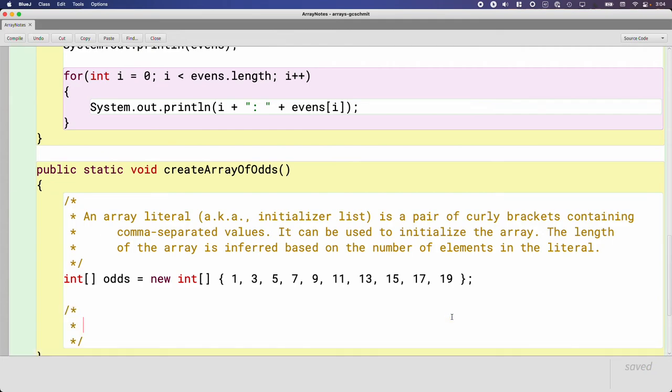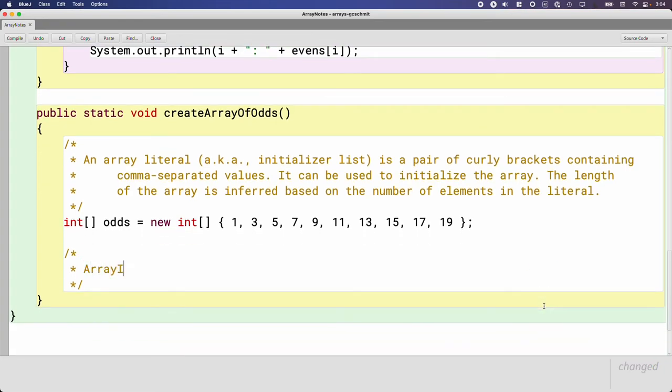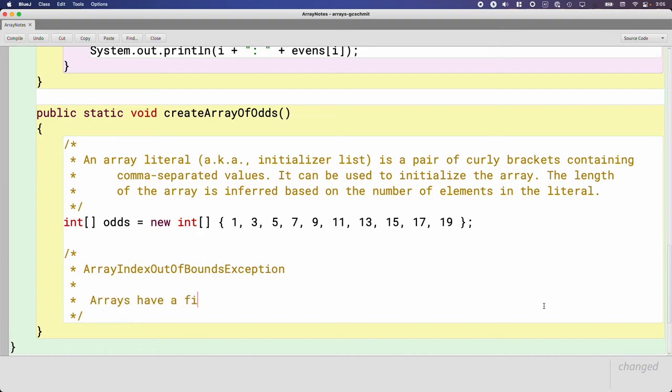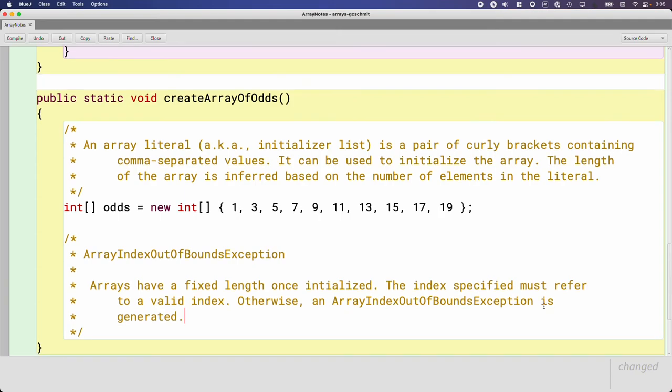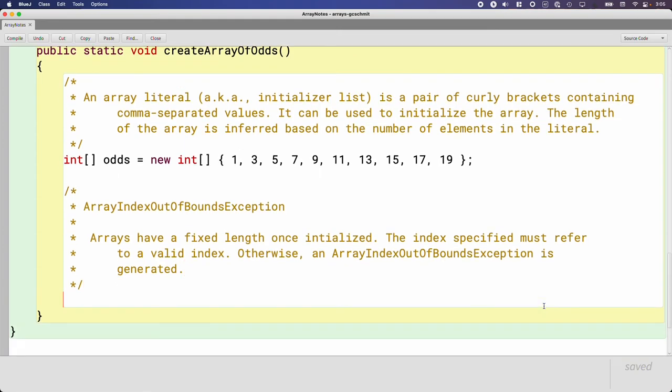It is called, it's an exception that we will most likely generate several times. It's called the array index out of bounds exception. So you may remember that arrays have a fixed length once initialized. We can't add an element to an array. We can't remove an element to an array. The index specified must refer to a valid index. Otherwise, an array index out of bounds exception, really long name, is generated. So let's write some code that intentionally generates this so that you can see what it looks like because you'll notice that it actually creates, it provides some information that helps us debug our code, which is fantastic.